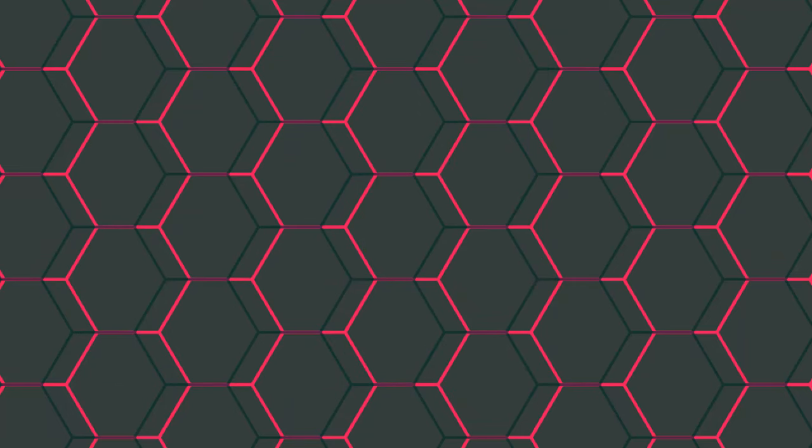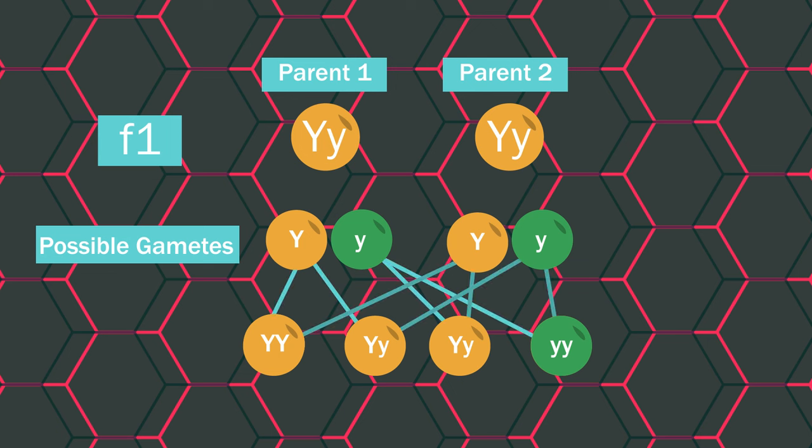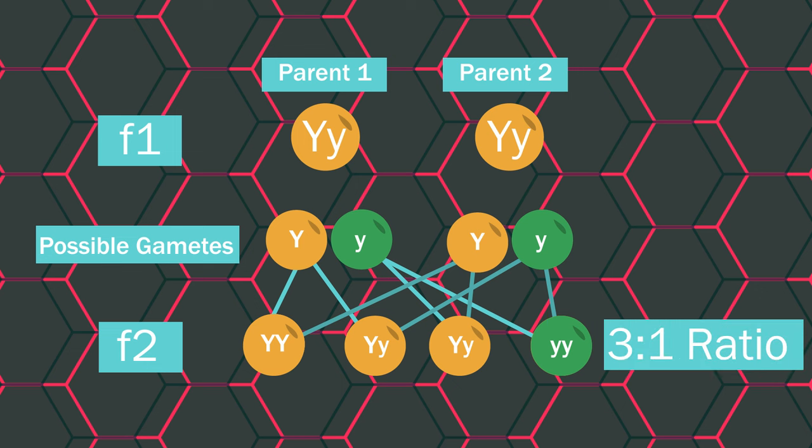Now let's see what happens if we cross two of the F1 offspring generation. And in our next generation, F2, we have three yellow pods. But this time, we have a green pod offspring that has both recessive green genes. Mendel consistently found this 3 to 1 ratio in later generations as well.